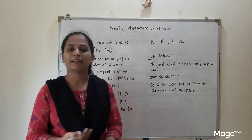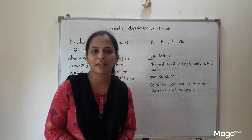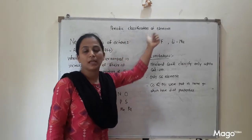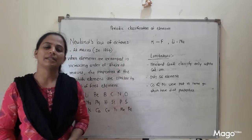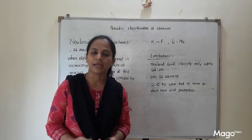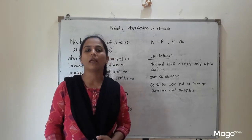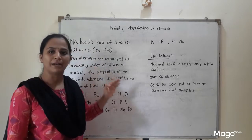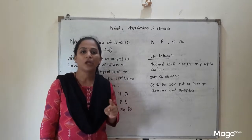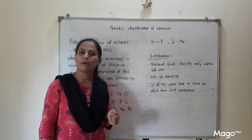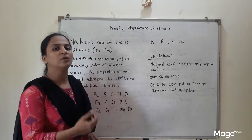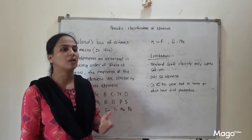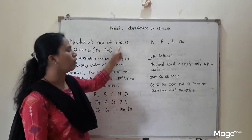Good morning dear students and welcome back in our video lecture on the same topic: periodic classification of elements. In my previous video lecture we discussed atomic mass, atomic number, and the first scientist who tried to classify all the elements present at that time — Dobereiner. We studied about Dobereiner triads. Now we are going to study one more scientist and his law: Newland's Law of Octaves.